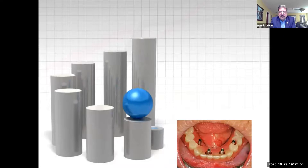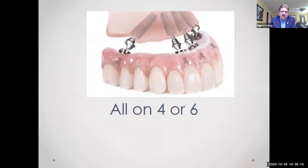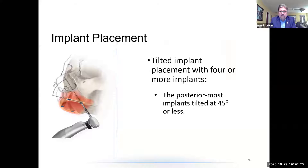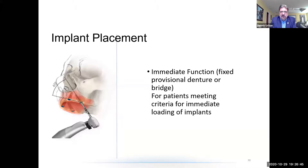Now let's talk about immediate load cases — All-on-4 or All-on-6 type cases. I'd like to see six implants on an upper instead of four, in case one fails. Most of the time we're doing six implants on an upper and maybe four on a lower. On implant placement for these cases, we use a tilted implant placement with four or more implants — posterior implants are tilted at 45 degrees or less. It's a graftless procedure where bone grafting is avoided by tilting the posterior implants and utilizing available bone. We need available bone and media function for fixed provisional dentures and for patients meeting the criteria for immediate loading of implants.